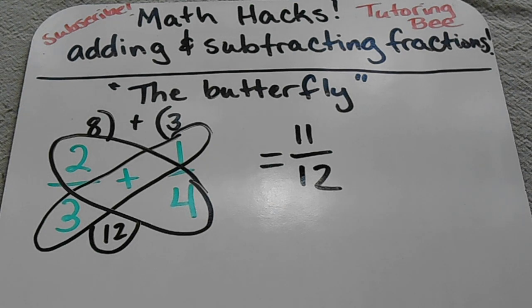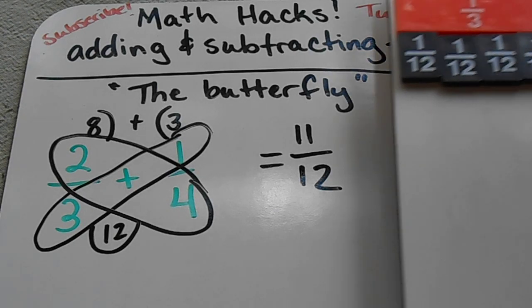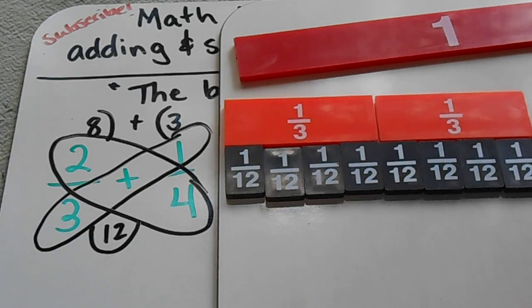and then my new denominator is twelve. Pretty cool, right? So I'm sure you're asking, how does this work? I'm so glad you asked. I have my fraction pieces to show you exactly why this method works.